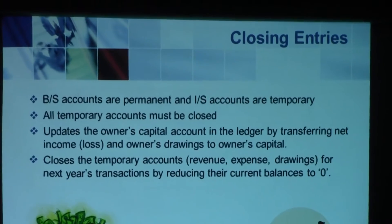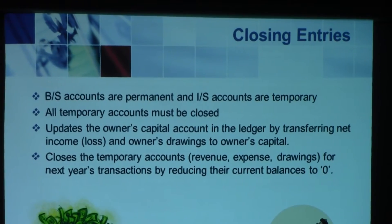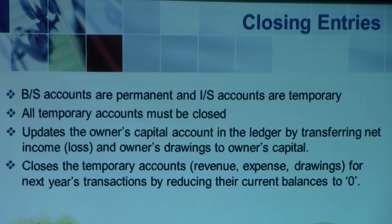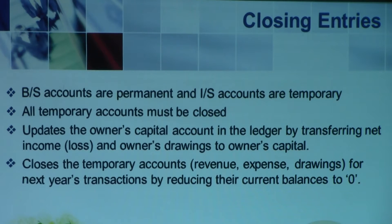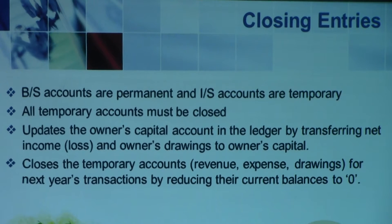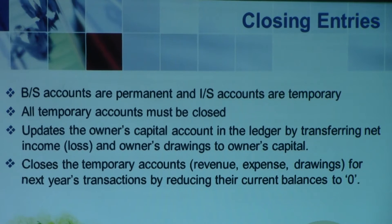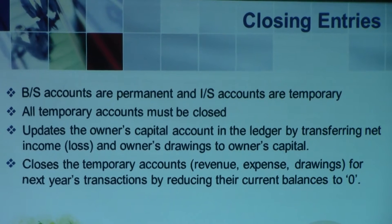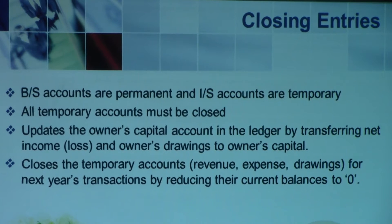Before we get into how to close accounts, we must understand why we are processing closing entries. There are two types of accounts: permanent and temporary. Permanent accounts are balance sheet accounts — they do not disappear from year to year. Temporary accounts are income statement accounts, which means revenues and expenses. We make temporary accounts zero at the end of the year so we can start fresh for the next year.